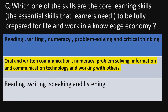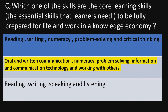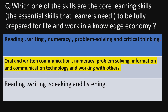Next question: Which one of the skills are the core learning skills — the essential skills that learners need to be fully prepared for life and work in a knowledge economy? Remember, this question is specifically about work in a knowledge economy — don't go for the general five core skills answer. The correct answer is: oral and written communication, numeracy, problem solving, information and communication technology, and working with others. I checked this answer from Google as well — all these competencies are linked with work in a knowledge economy, which is why this is the right answer.